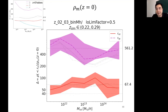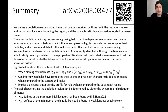This shows that the enclosed density within the characteristic depletion radius is mass-independent for these redshift ranges and decreasing with decreasing redshift. Here is a summary of my work, and if you have any questions please come to the discussion time. I look forward to seeing you there. Thank you.